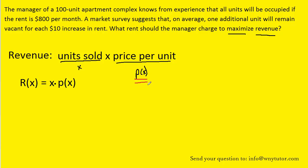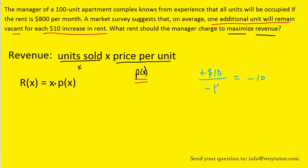We're going to have to come up with an expression for p(x). The question notes that one additional unit will remain vacant for each $10 increase in rent. Every time the price goes up by $10, the number of units sold goes down by 1, which simplifies to a rate of negative 10. This consistent reduction suggests that the price function is a linear function whose slope is equal to negative 10.